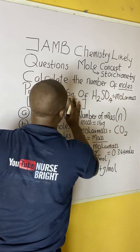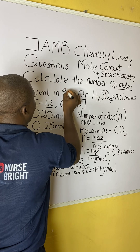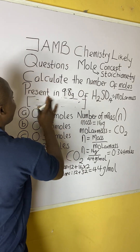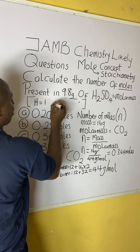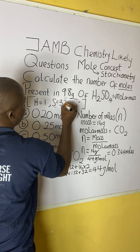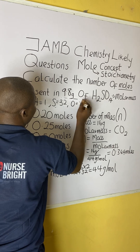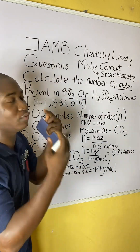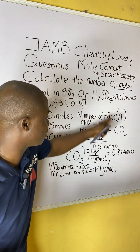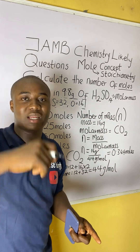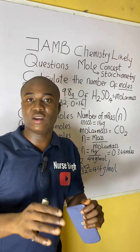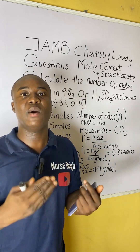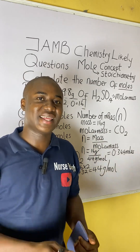We are going to change the compound now. The new compound is H₂SO₄ and the mass is 9.8 grams. The elements now include hydrogen with atomic mass 1, sulfur with atomic mass 32, and oxygen with atomic mass 16. Comment your answer below. If you found this video helpful, make sure you click the subscribe button and share the lesson with your friends. Thanks for watching.